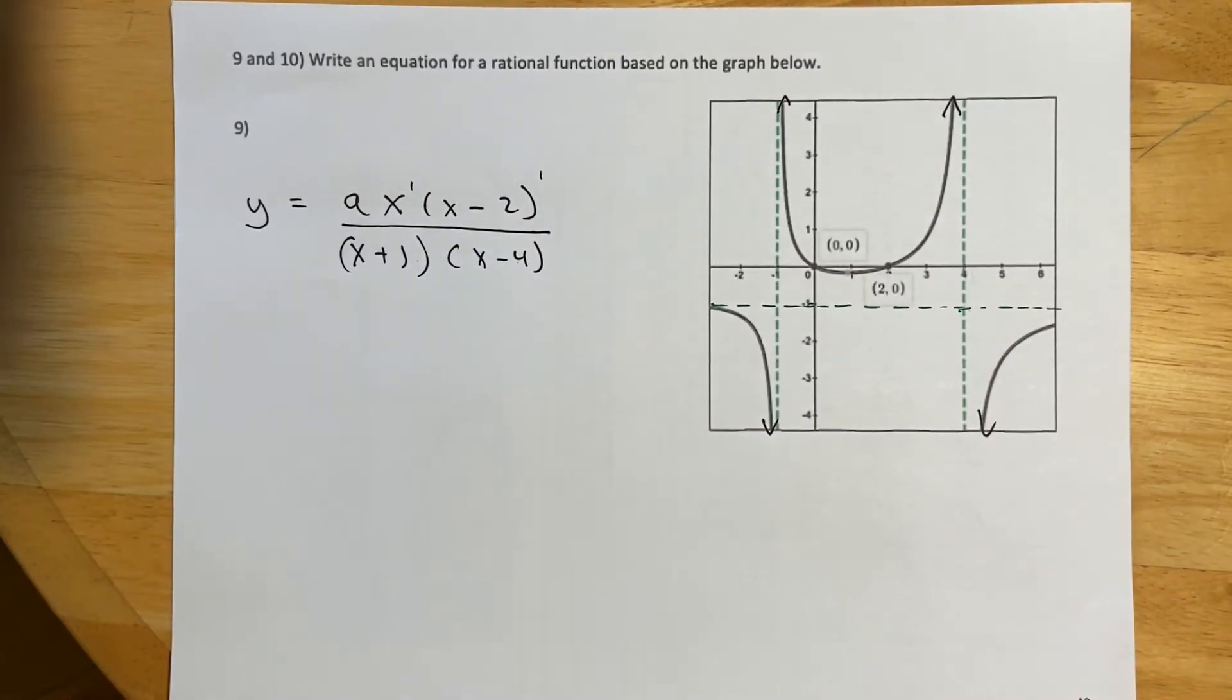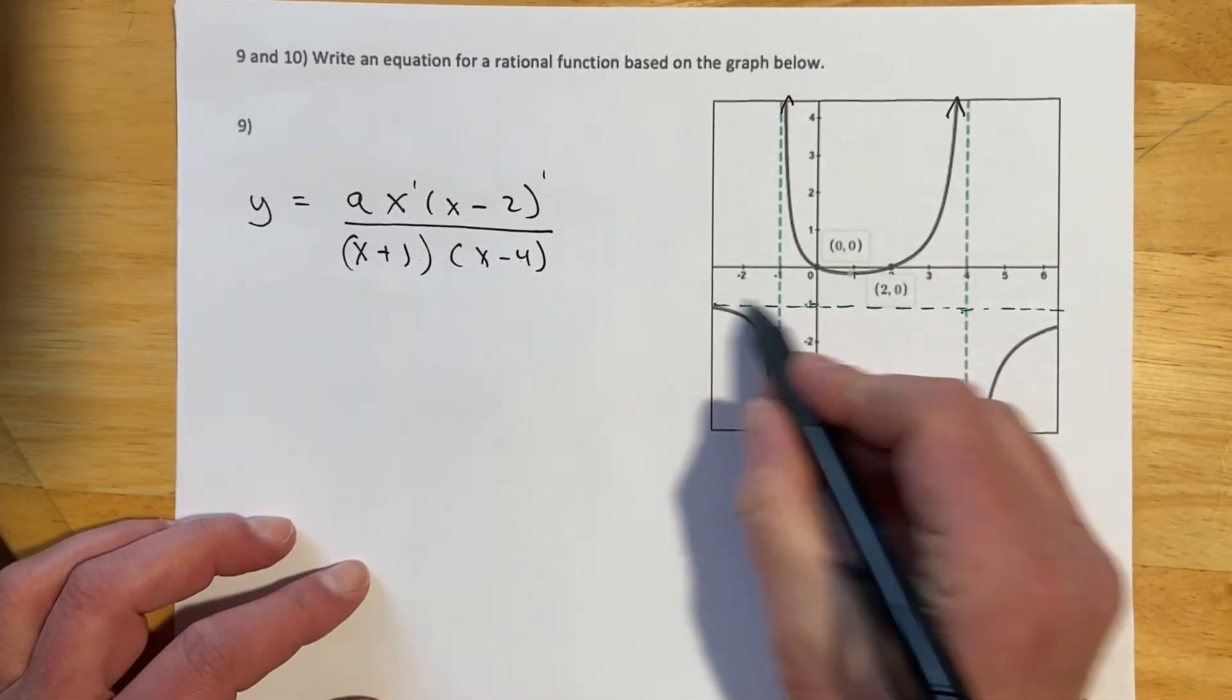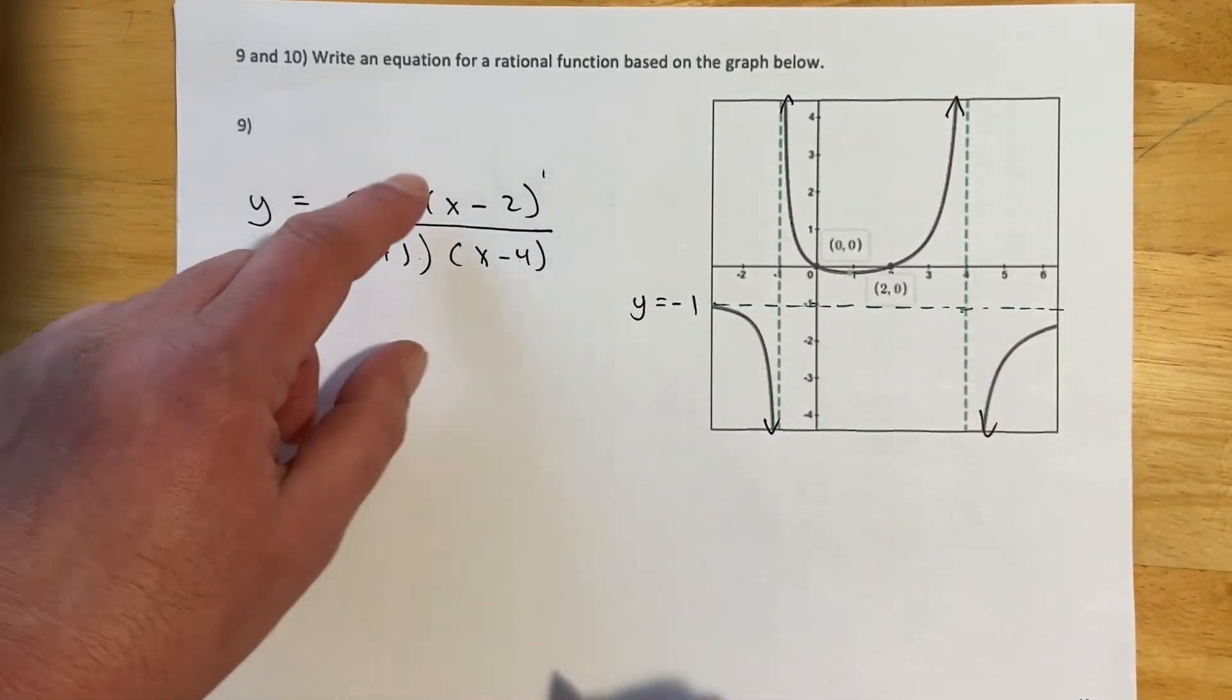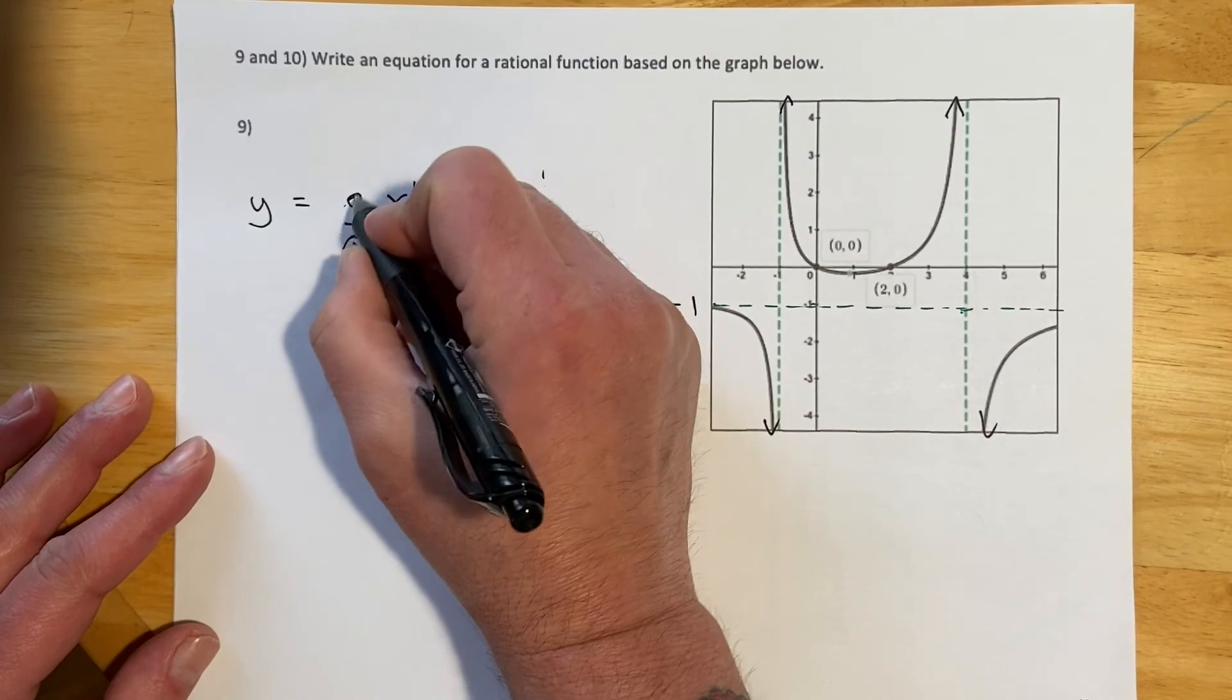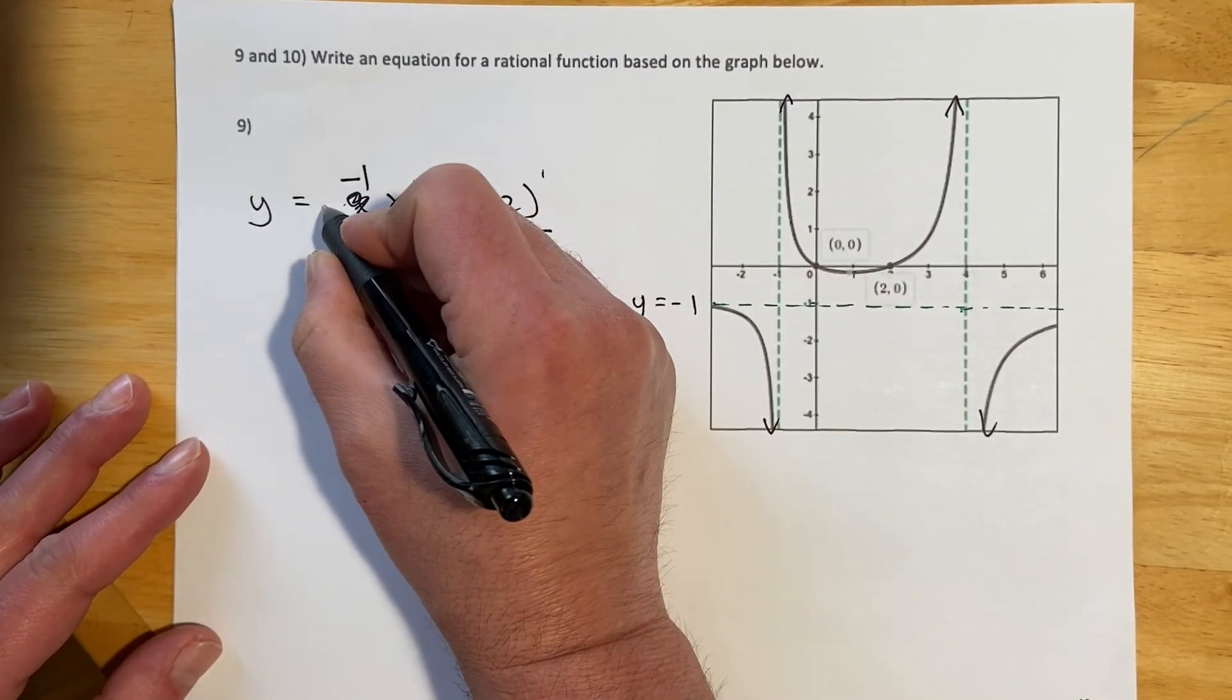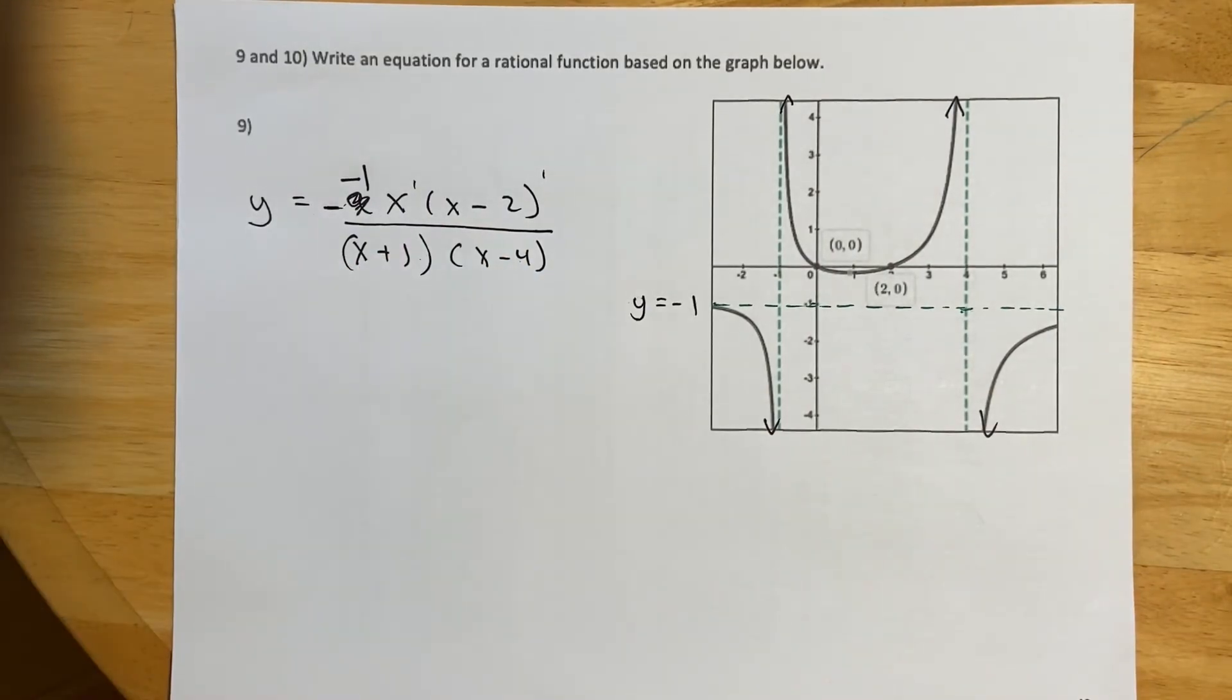And then with this, it's great because they gave me right here that the horizontal asymptote is Y equals negative 1. So that just means instead of A, I'm just going to scratch out my A and write negative 1. Or you could simply just put a minus sign there. And then that would be it.